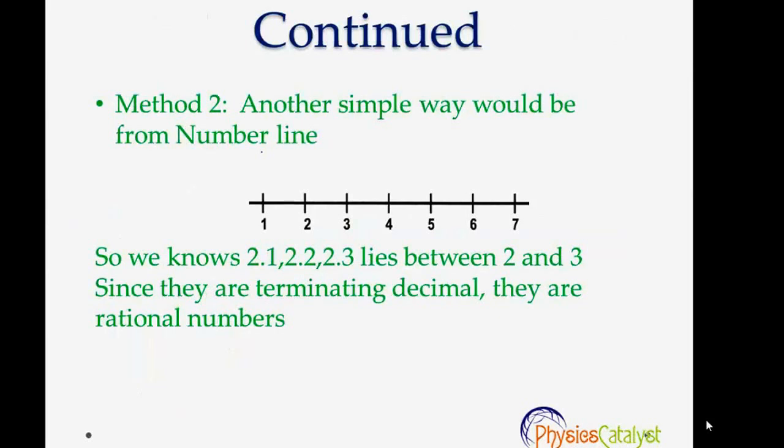Another simple way would be from the number line. We can see from the number line that 1.1, 1.2, 1.3 lie between 1 and 2. Since they are terminating decimals, they are rational numbers.